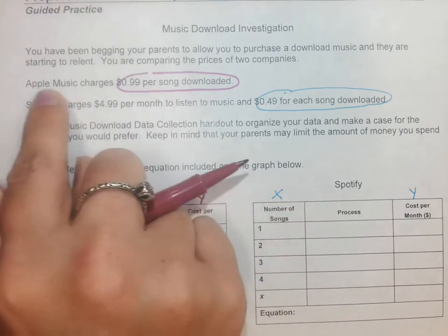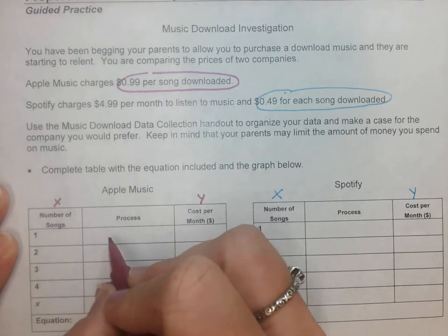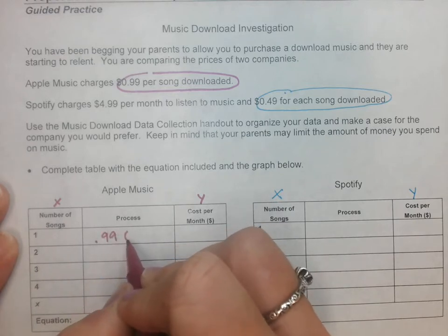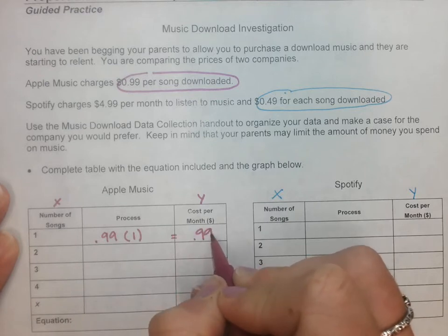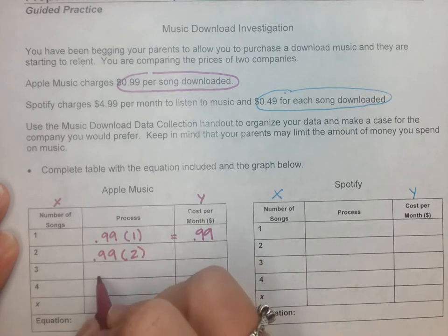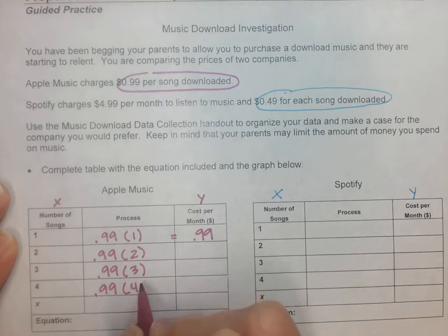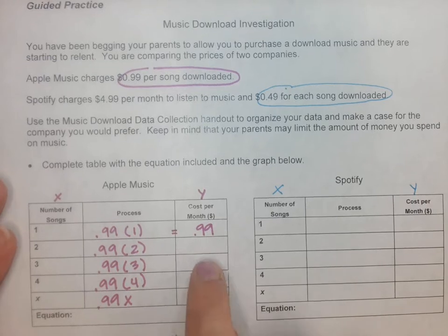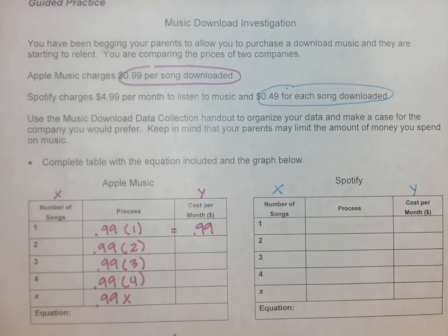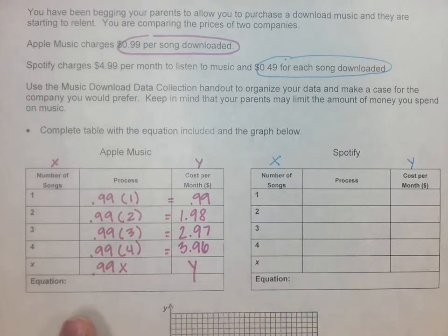Let's focus on Apple Music first. No fee at all. So one song would be 99 cents times 1 equals 99 cents, right? 99 cents times 2, 99 cents times 3, 99 cents times 4. Which means this would just be 99 cents times x. So what I want you to do is pause and fill in those y values.